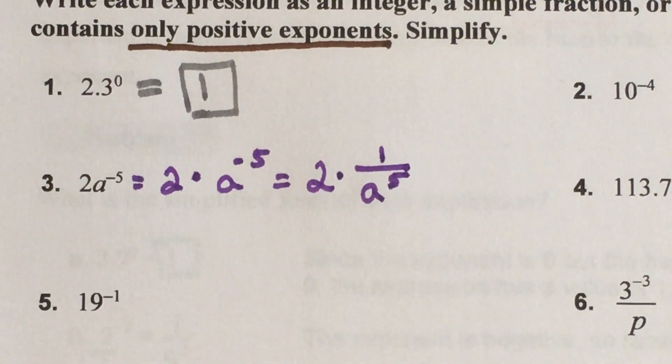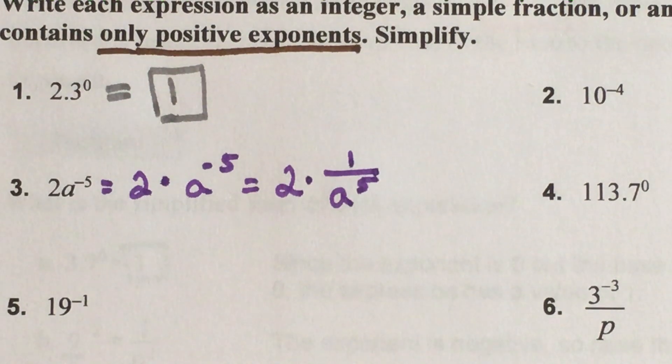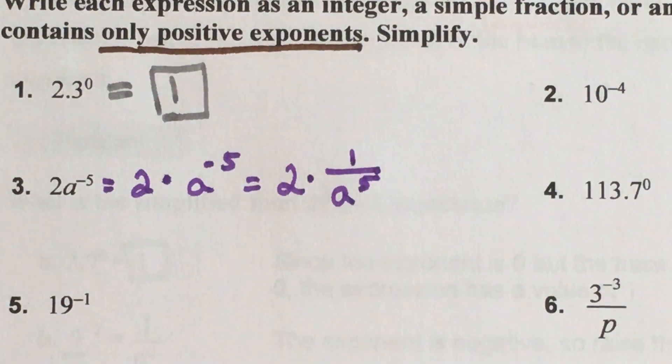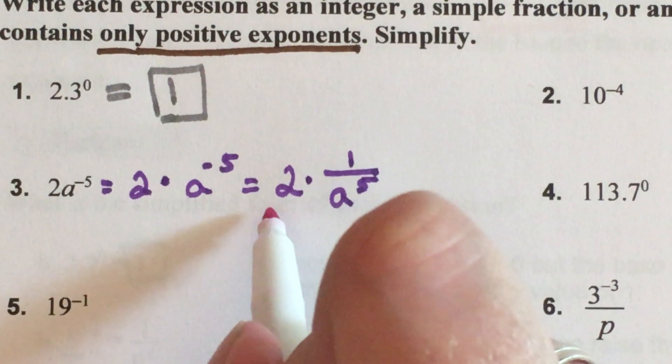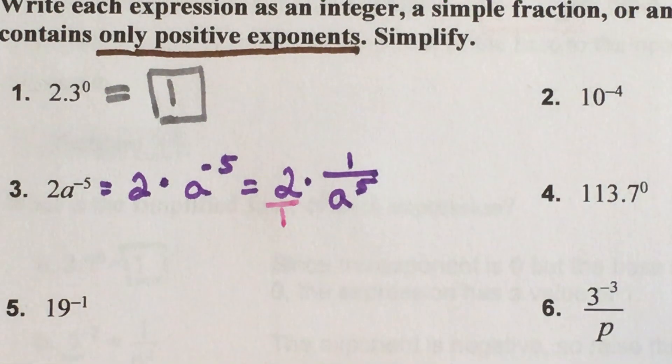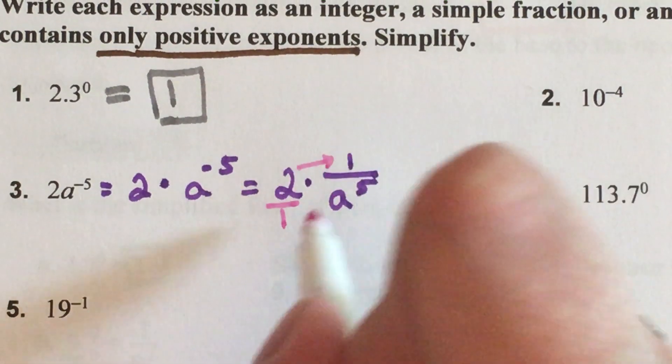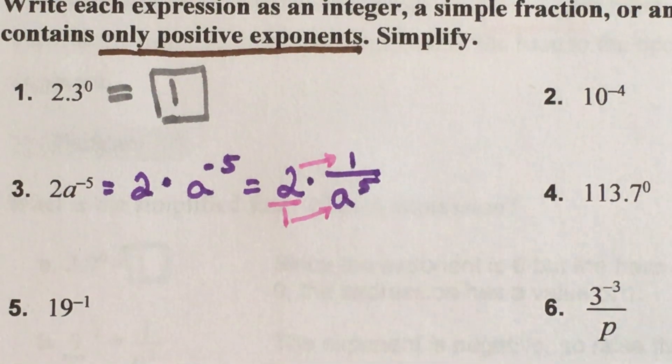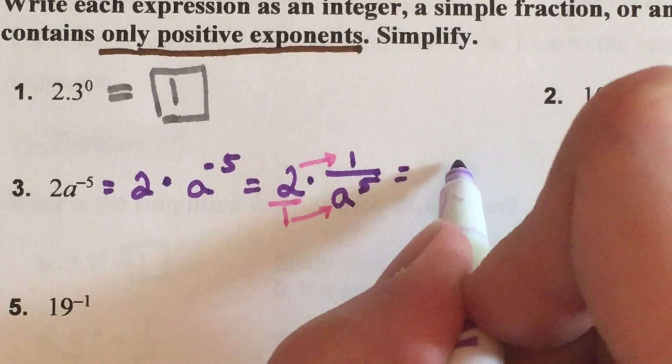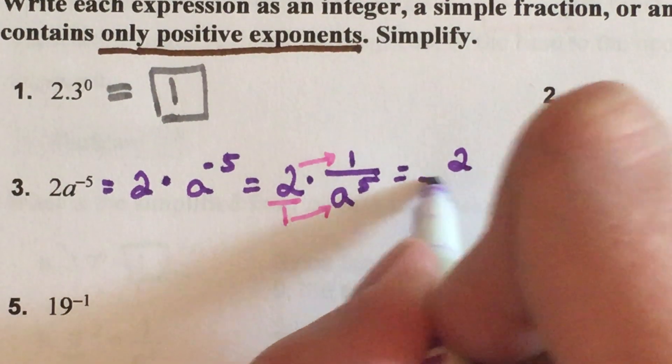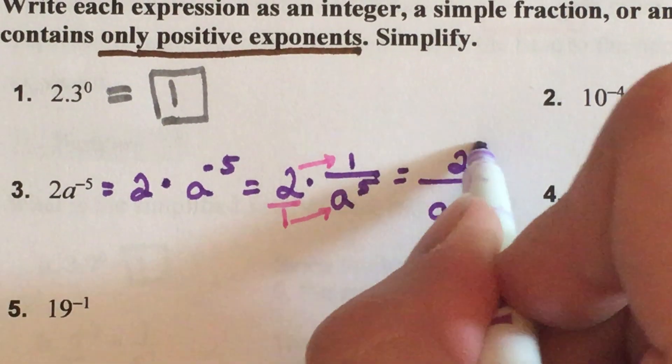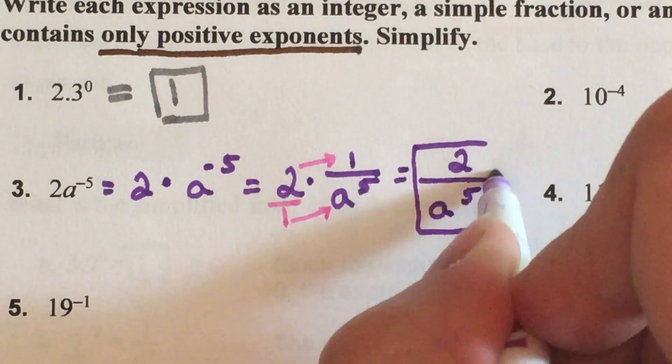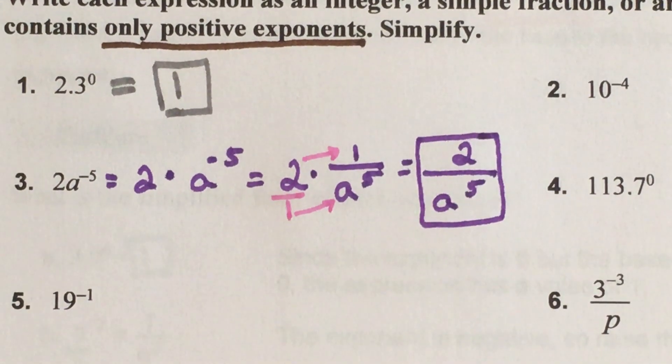Let's bring that back together so we can see where they go. Remember whenever we said integers always have a 1 underneath of them, so we multiply straight across and find that we have 2 over a to the fifth power. That's my final answer.